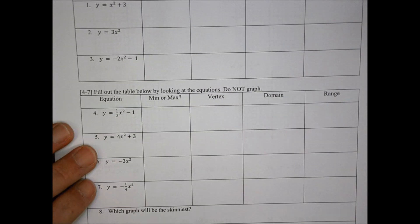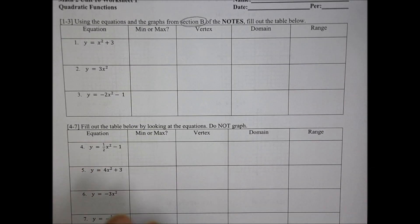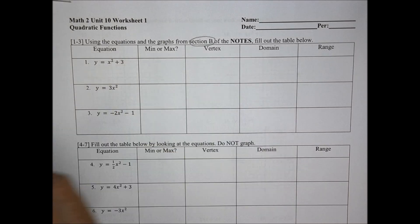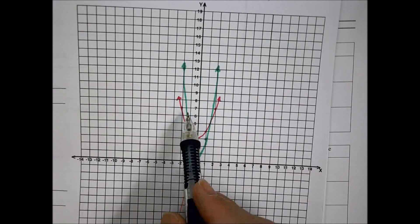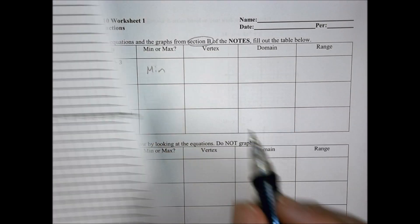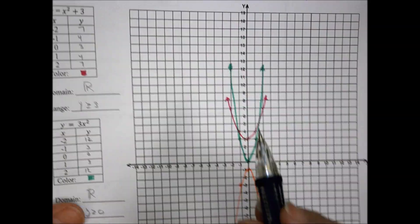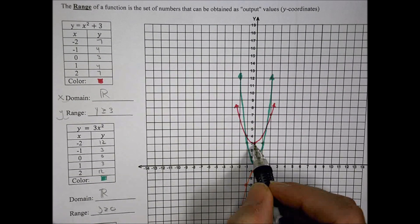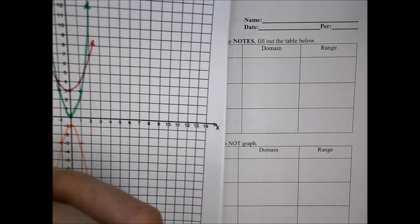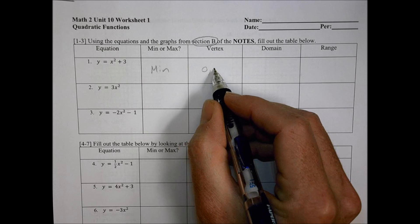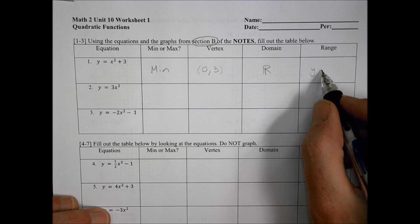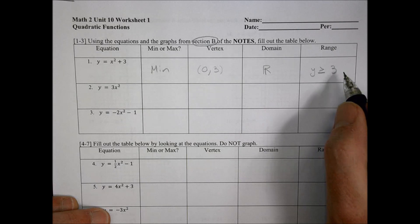Using that information, take a look at this chart and fill in these values. Looking at y equals x squared plus 3 — the pink graph — is there a minimum or a maximum? I don't have a maximum; I have a minimum, a low point. The vertex is that point where the maximum or minimum is located, and in this case the point is right here at zero comma three. The domain is all real values of x, and the range is y greater than or equal to three.